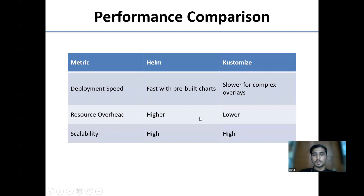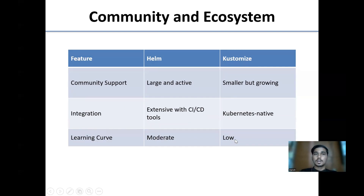Performance comparison: Deployment speed is fast with pre-built charts in Helm; slower for complex setups in Kustomize. Resource overhead is higher in Helm and lower in Kustomize. Scalability is high in both Helm and Kustomize.